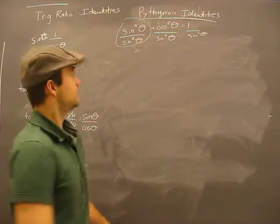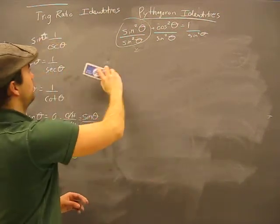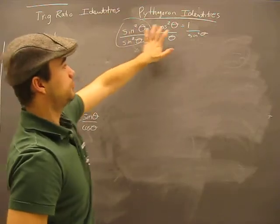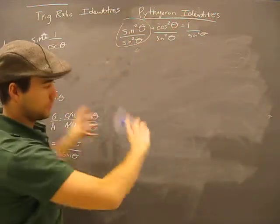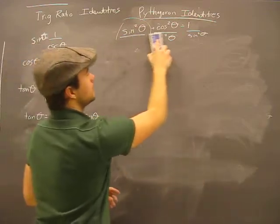Alright, now this one's going to be really fast. We took our identity and got to this point in the previous video, and I said what happens if we divide by sine squared. Well, that got us our identity.